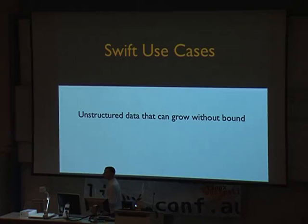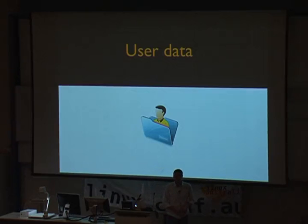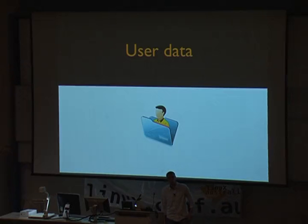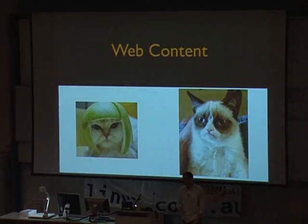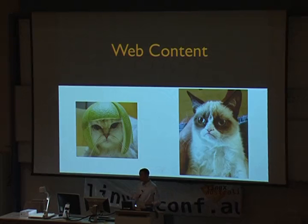Swift is going to be good for any sort of data that is unstructured and can grow without bound — user data. Things where you're storing a little piece of information about users, or user-generated data like images or other uploaded content. Maybe you have a small settings file for every single user that needs to be very available and in aggregate can grow extremely large, both in cardinality of objects and aggregate total storage. Another great use case is web content: serving images — which on the internet means cat pictures — static HTML files, JavaScript, CSS, images, videos.